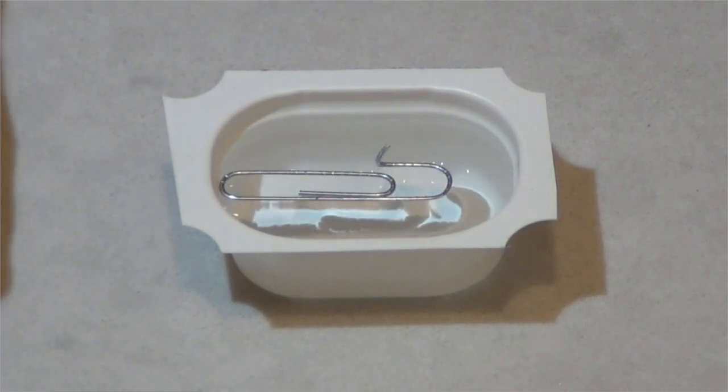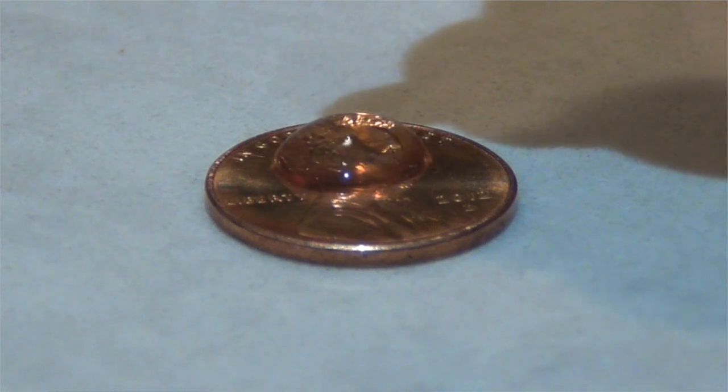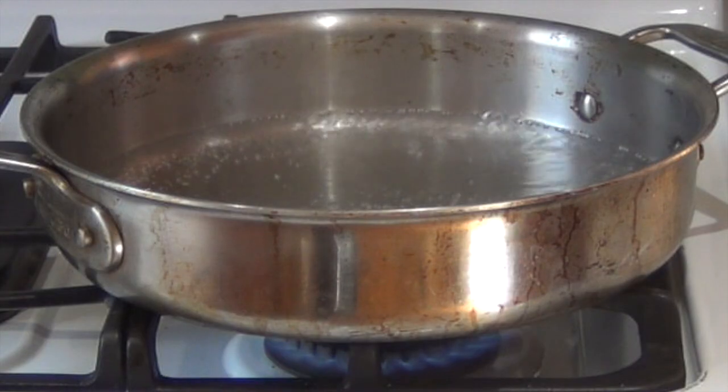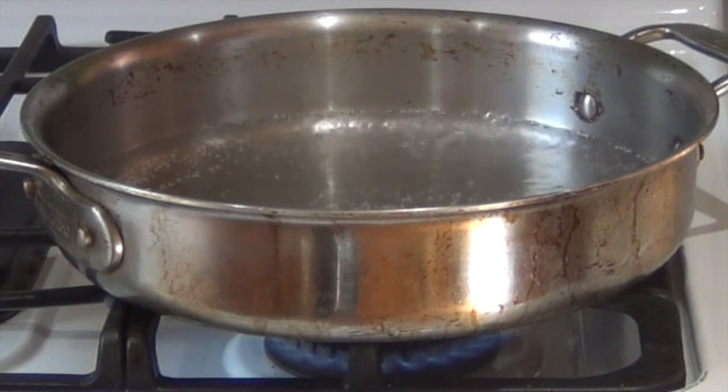That's why you can float a paper clip on water's surface. It's why water droplets have this spherical shape, and it's also why it takes so much energy to get water to boil away.